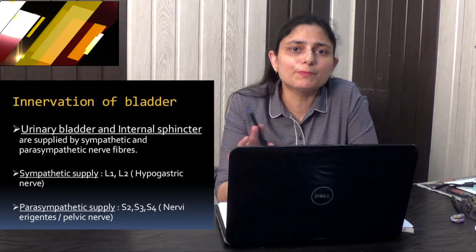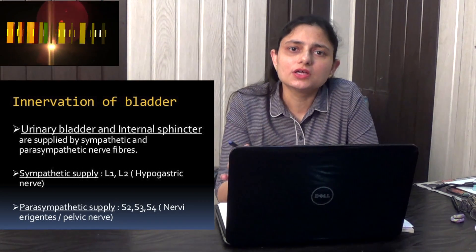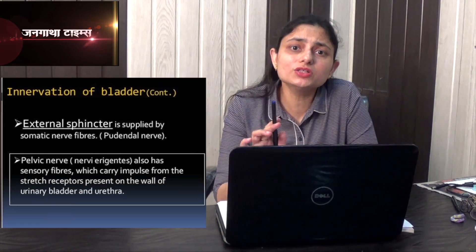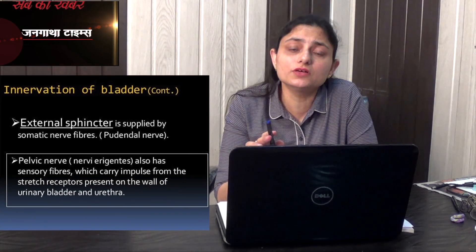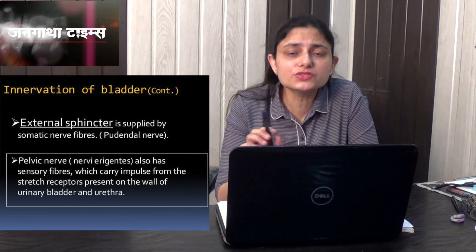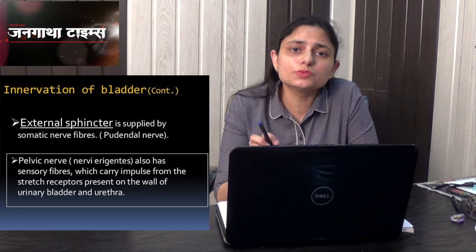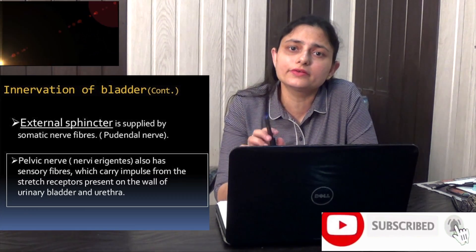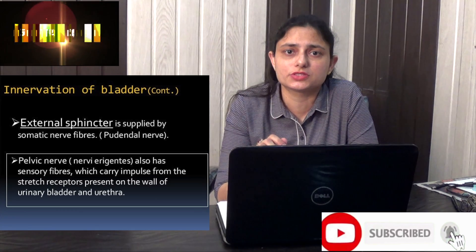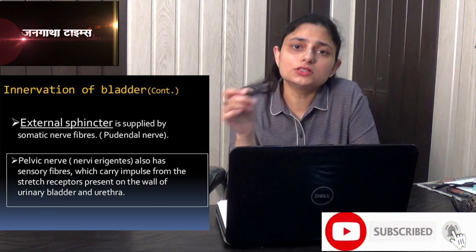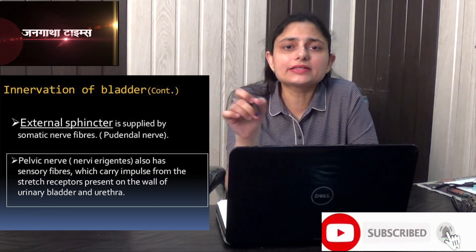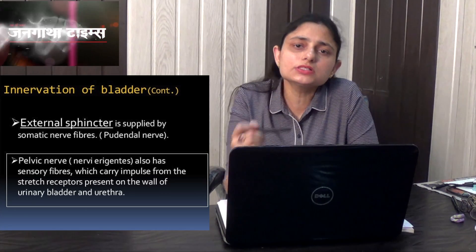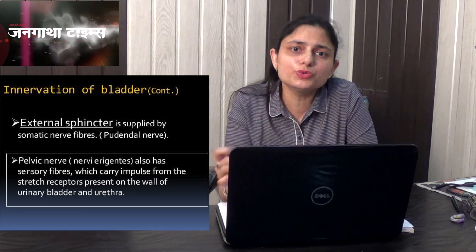The parasympathetic nerves are the pelvic nerves and the sympathetic nerves are the hypogastric nerves. The pelvic nerve also has sensory fibers which take the stimulus from the stretch receptors of the bladder wall as well as the internal urethral sphincter. The external urethral sphincter is supplied by the pudendal nerve.